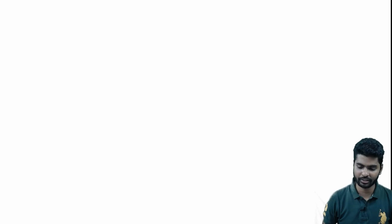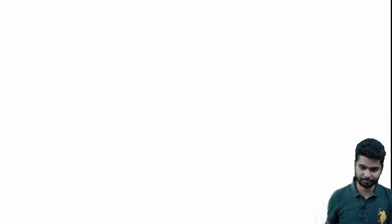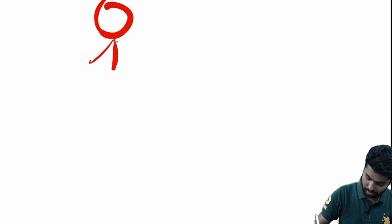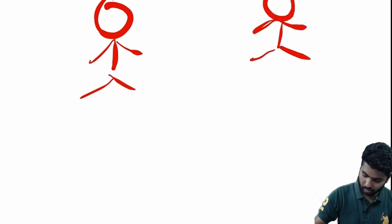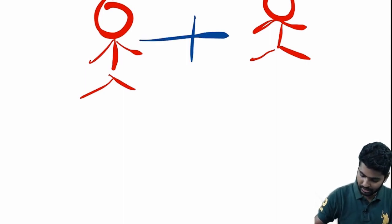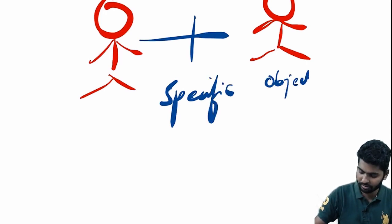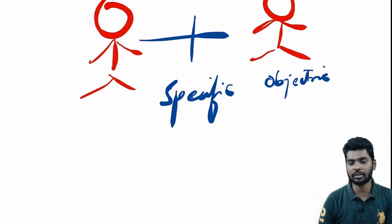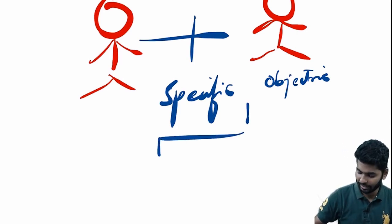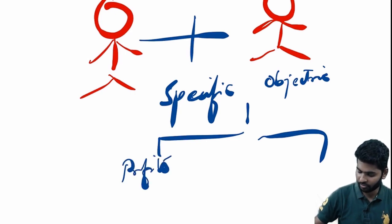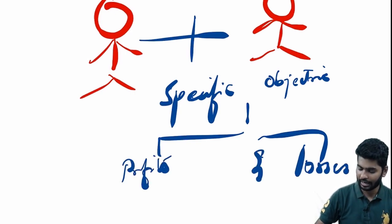Good morning all. What we will be doing today is talking about joint venture. Now what is a joint venture? A joint venture is basically when more than two people come together to start a business with a specific objective — to share profits and losses.